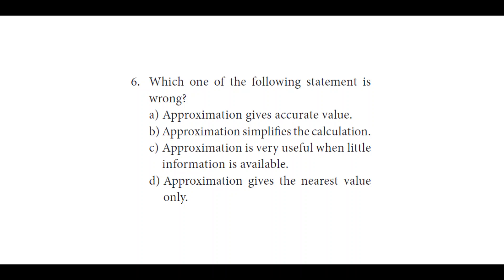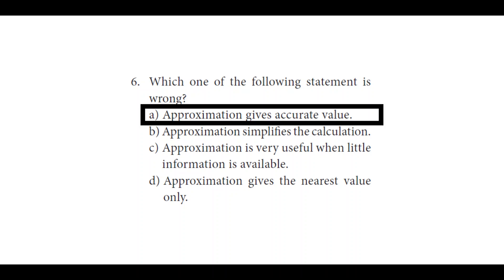The next question: which one of the following statements is wrong? A: approximation gives accurate value; B: approximation simplifies the calculation; C: approximation is very useful when little information is available; D: approximation gives the nearest value only. Statement A is the wrong one — approximation only gives a nearest value, not an accurate value. These two concepts are contradictory. We will see the next section.